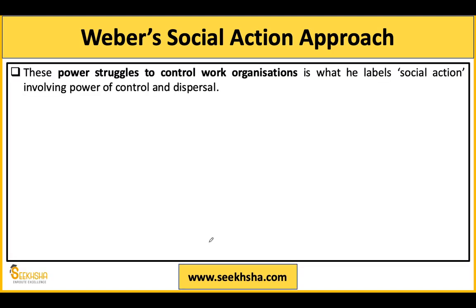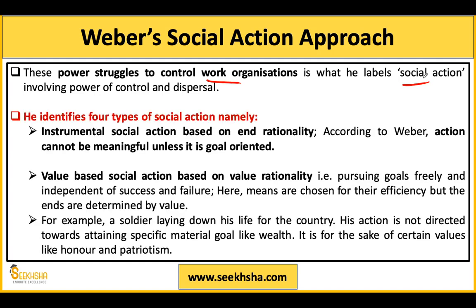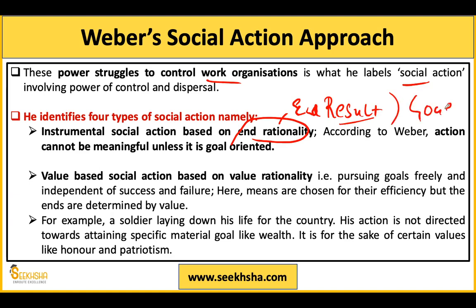These power struggles also control the work organization. This power control or dispersal is what Weber calls social action. Weber identifies four types of social action. The first is based on end rationality — based on the end result, the ultimate goal. Actions cannot be meaningful until they are goal-oriented, so your goal must be set. Actions are not judged as right or wrong unless they are goal-oriented.